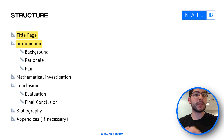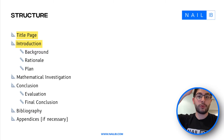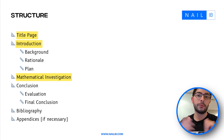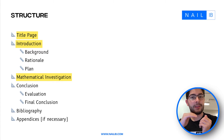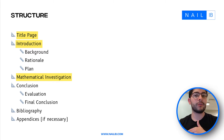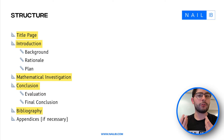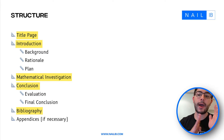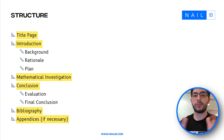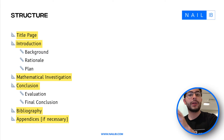The next section is the mathematical investigation — that's where the bulk of your mathematics, testing, and calculations go. Make sure you include plenty of subheadings inside that section, otherwise it can be hard to follow. After that comes a conclusion section with your evaluation and final conclusion. Then a bibliography for all your references, though you should also be referencing throughout using in-text citations or footnotes. Finally, you optionally have an appendix if needed.